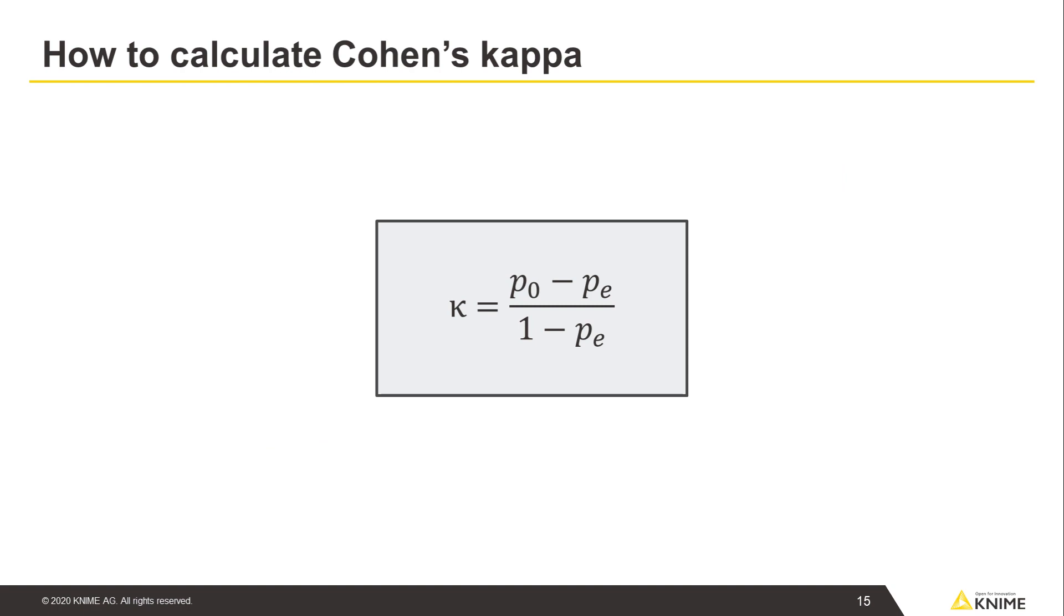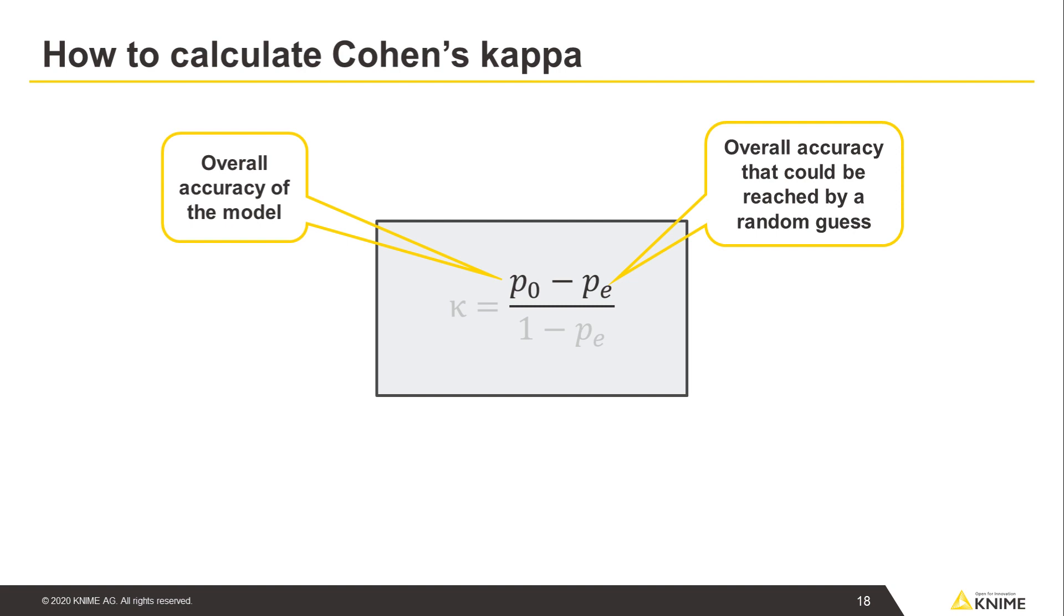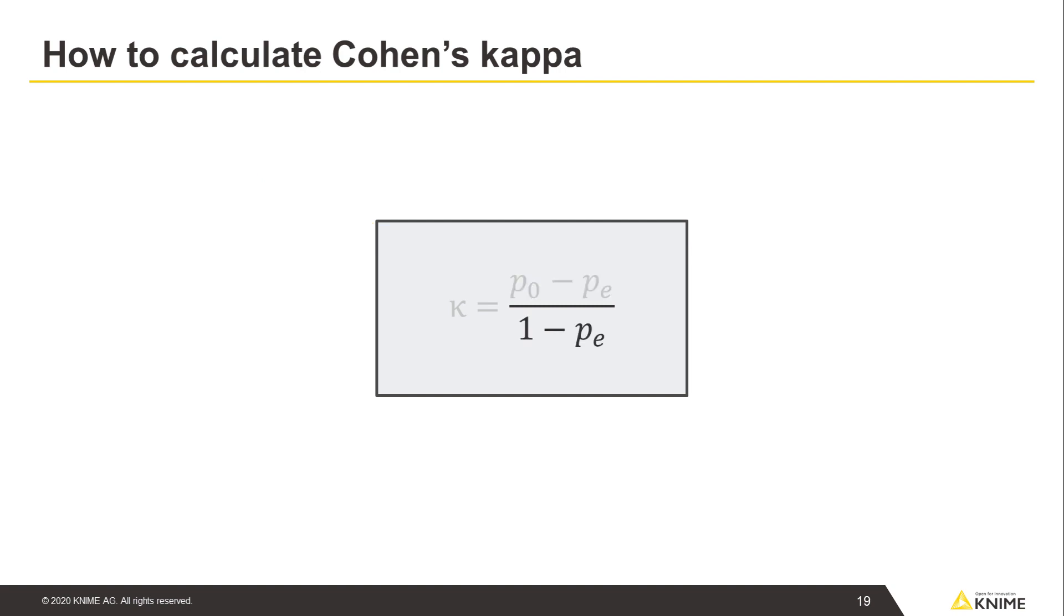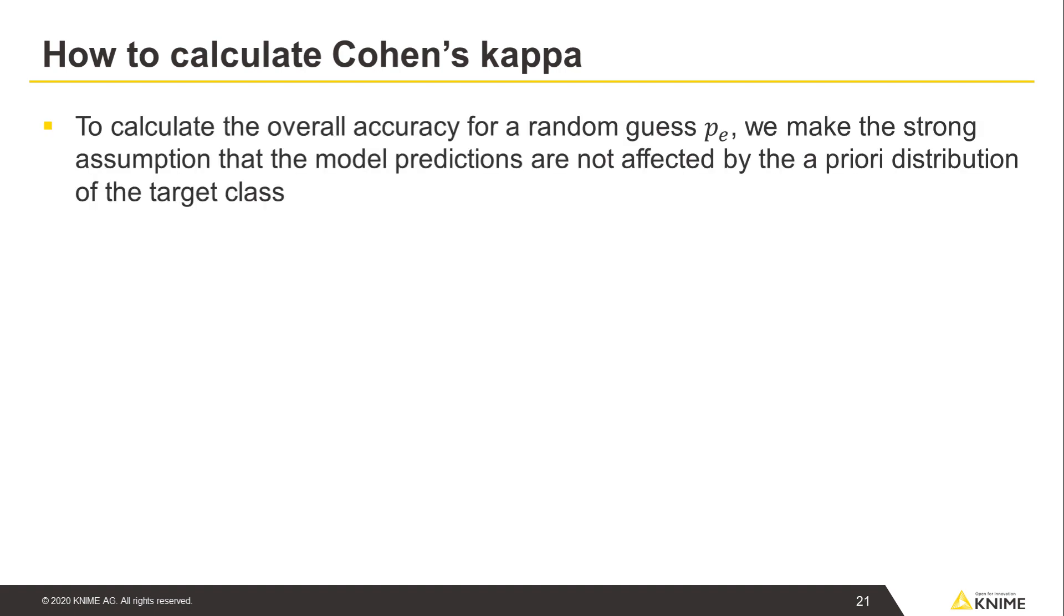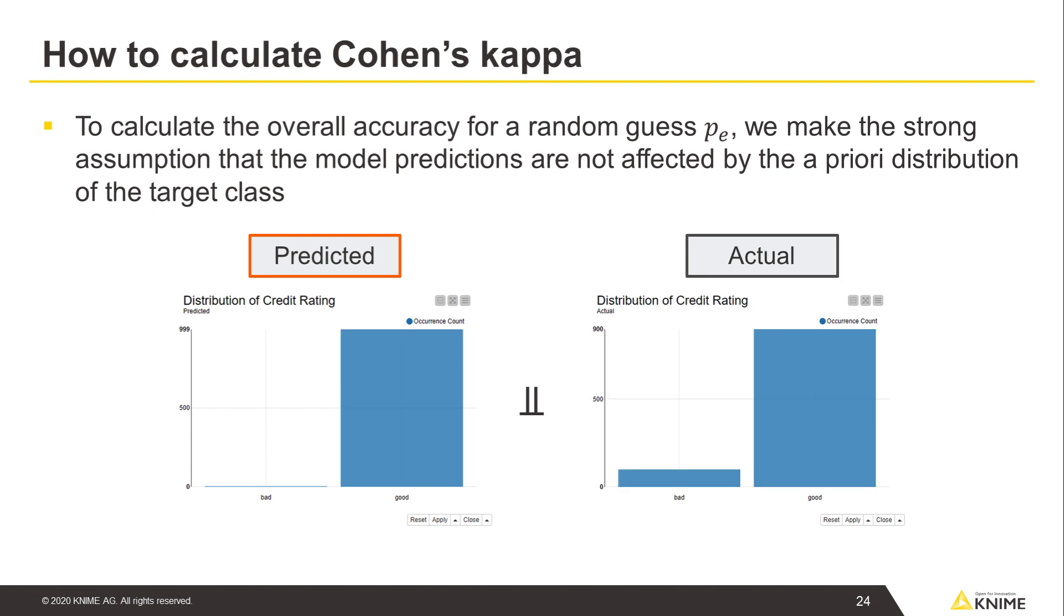Cohen's kappa is calculated with this formula. The numerator is the difference between the overall accuracy of the model P0 and the overall accuracy that could be reached by a random guess PE. The denominator is the maximum value of this difference as given by a perfect model with an overall accuracy of 100%. To calculate the overall accuracy for a random guess PE, we make the strong assumption that the model predictions are not affected by the a priori distribution of the target class.